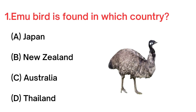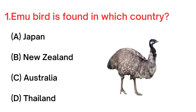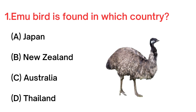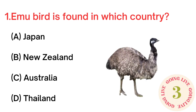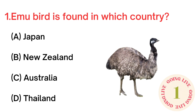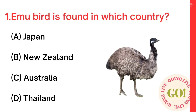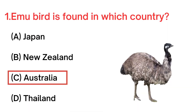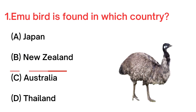Your first question. Emu bird is found in which country? A. Japan. B. New Zealand. C. Australia. D. Thailand. Your answer is C. Australia.